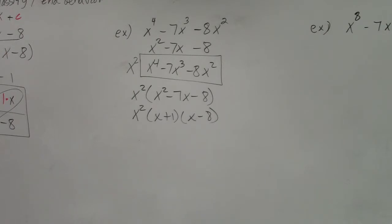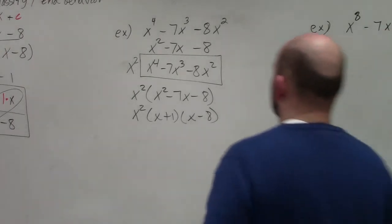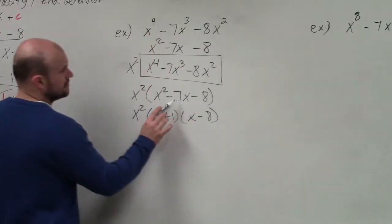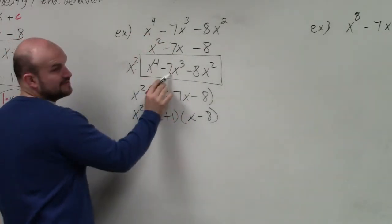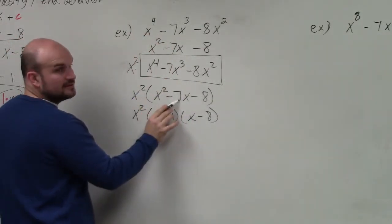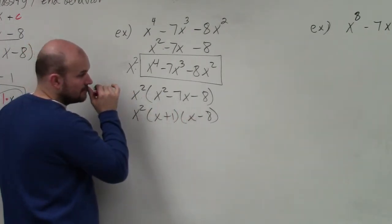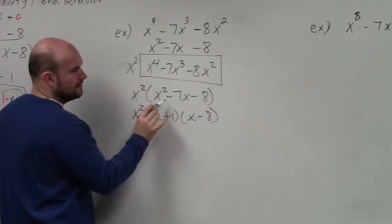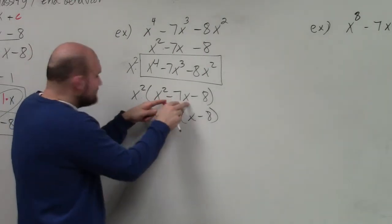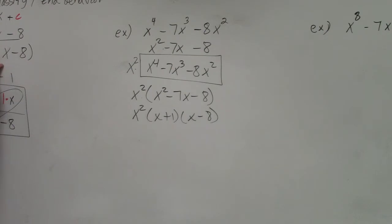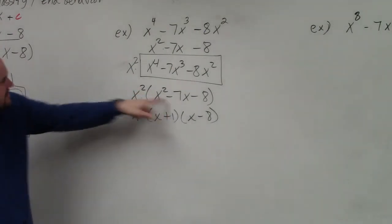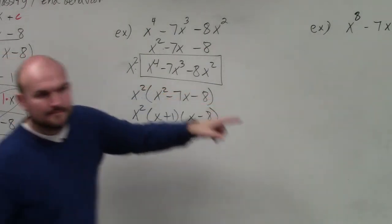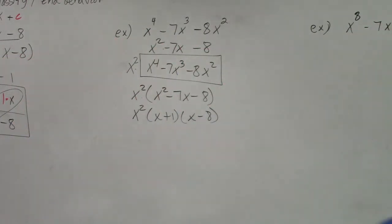Student: Negative 7x? Teacher: Negative 7x. This times this gives you that. This times that, it's right there. What are you talking about? I factored this. This factored is right here. Yeah, look, this is the same equation, right? So I factored it.